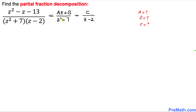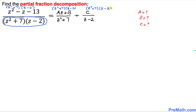We want to remove these fractions. So the very first thing we are going to do is multiply each and every term by the full denominator quantity. I am going to multiply by z squared plus 7 times z minus 2 across the board — on all terms on both sides.